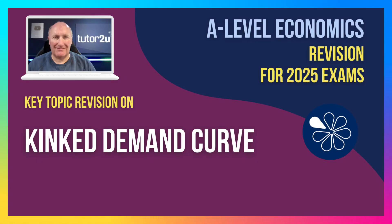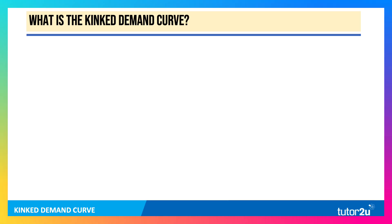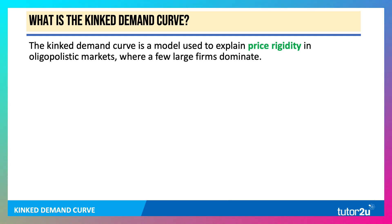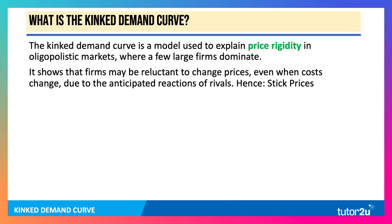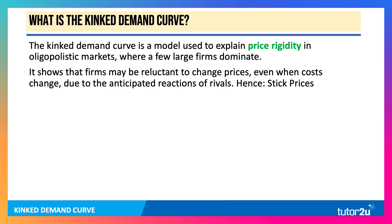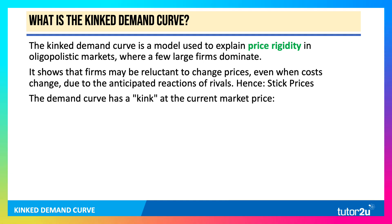Ahead of paper 1, let's do some quick revision on the kinked demand curve. The kinked demand curve is a model we use to explain stable or rigid prices in oligopolistic markets where a few large firms dominate. It shows that businesses may be reluctant to change their prices even when marginal costs change, due to the anticipated reaction of rivals — hence sticky prices. The demand curve is assumed to have a kink at the current market price.